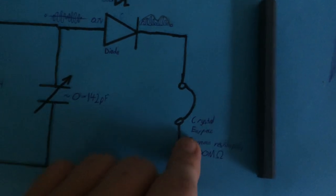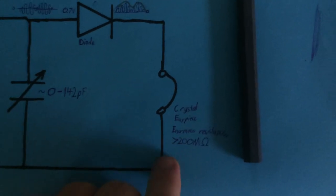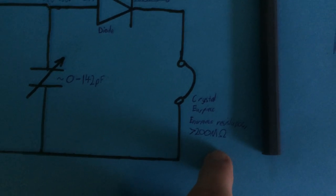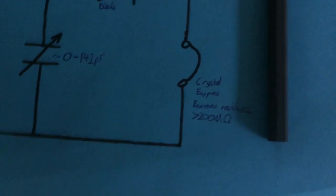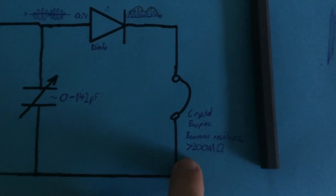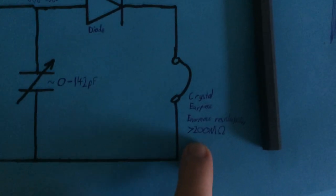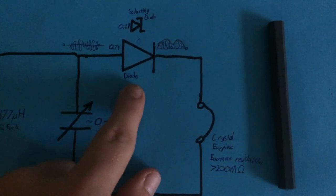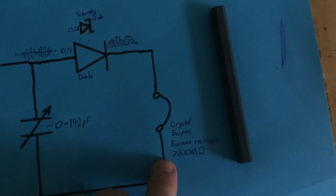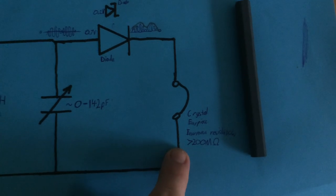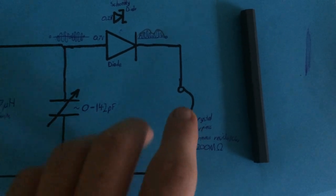The last part of the circuit is the crystal earpiece. It has an enormous resistance that I can't really seem to measure on my multimeter. Maybe it's that big or maybe it's some other property. And the crystal earpiece isn't actually where the crystal radio gets its name. It gets it from the crystal diode.